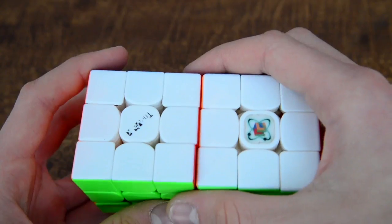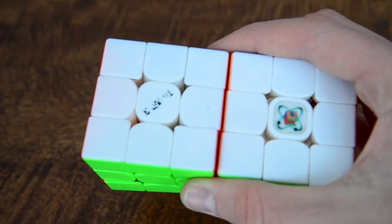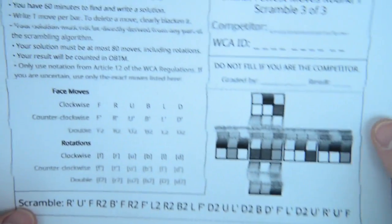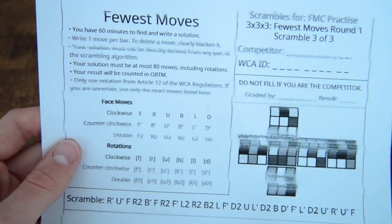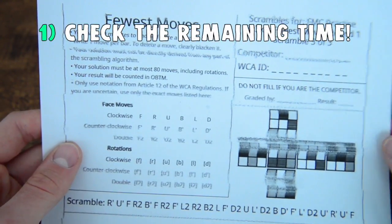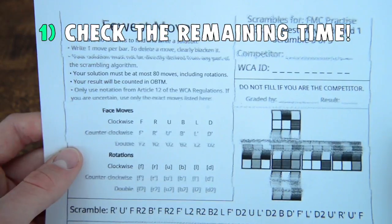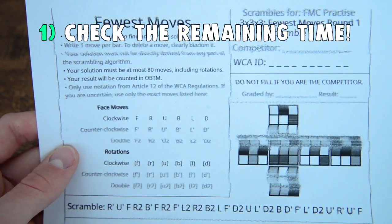Okay, so to start off with I'm going to explain some of the most important rules in FMC attempts. The first rule that you're going to have to know is you have only one hour to complete and write a solution, so it's very useful to check time from time to time.